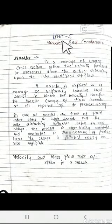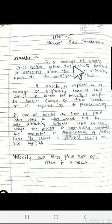Hello students, today we will start unit 5th which is known as nozzles and condensers. In unit 3 we have already discussed about the nozzle. In a passage of varying cross section, either the velocity increases or decreases. If we have varying cross section, either the velocity increases or decreases along the section.